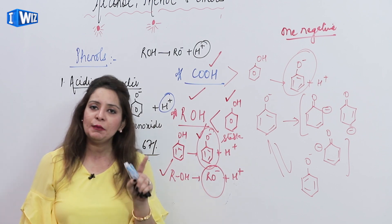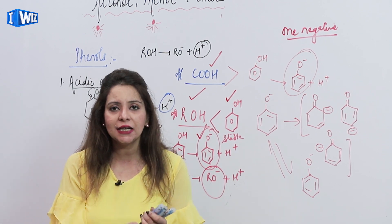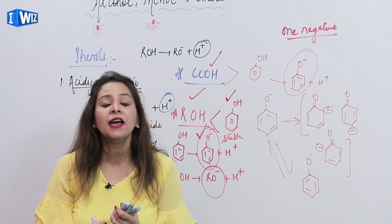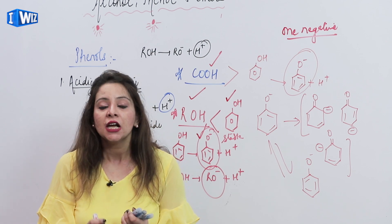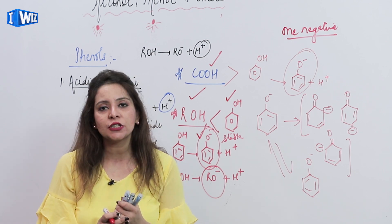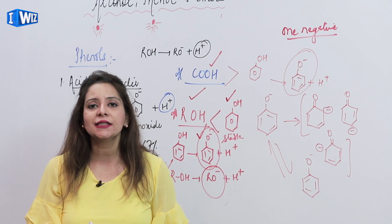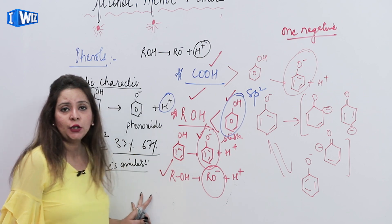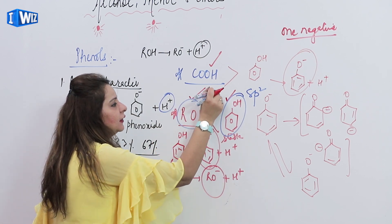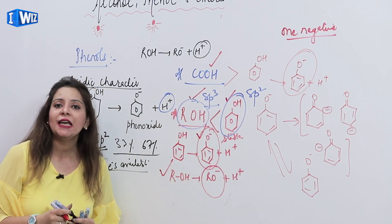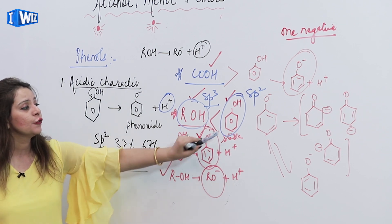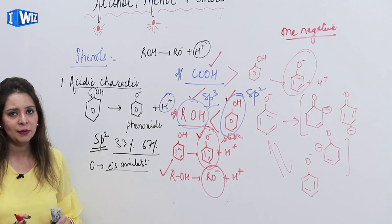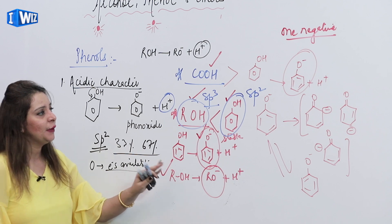This means phenol is more acidic. So one reason is stabilization - phenoxide ion is more stable. Why? The stability is discussed on the basis of resonance, where the negative charge is more dispersed. But in alcohol, we don't see this. And the second reason is that phenoxide ion is more stable, so phenol is more acidic if we compare it with alcohol.